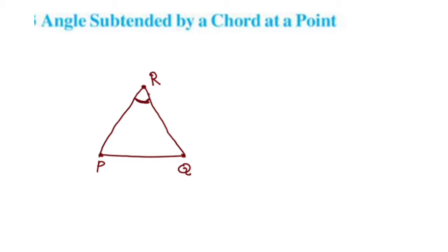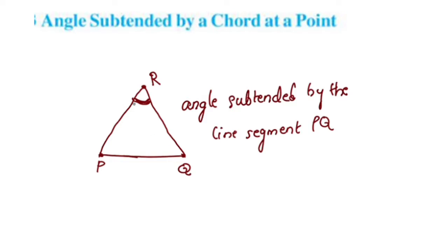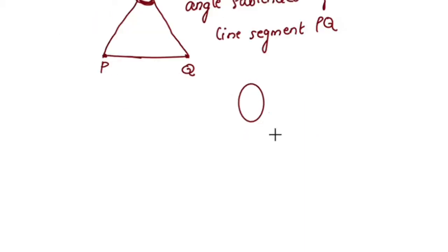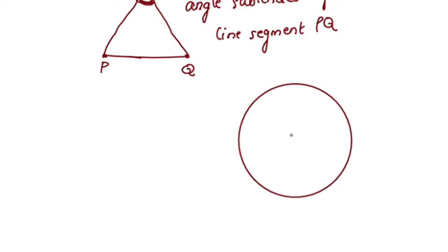We are going to take a look at the angle at point P. This is the circle, and this is the center of the circle. I have a chord in this circle — this is chord AB. We have two points on this circle: point P and point Q.